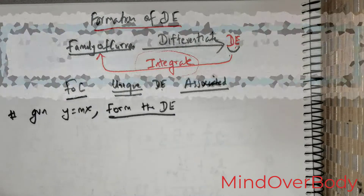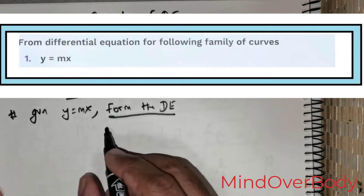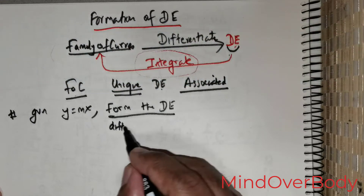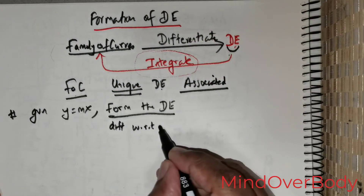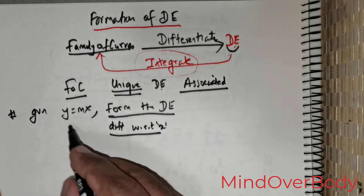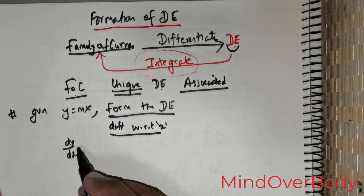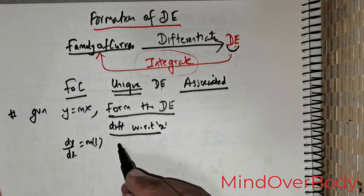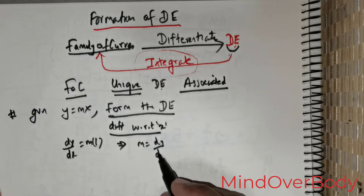We are given the question: y = mx, and we are expected to form the differential equation. What we have to do is start off by differentiating with respect to x. When we do that, this gives dy/dx. Since m is a constant and the differential of x is 1, we can rewrite m as dy/dx.